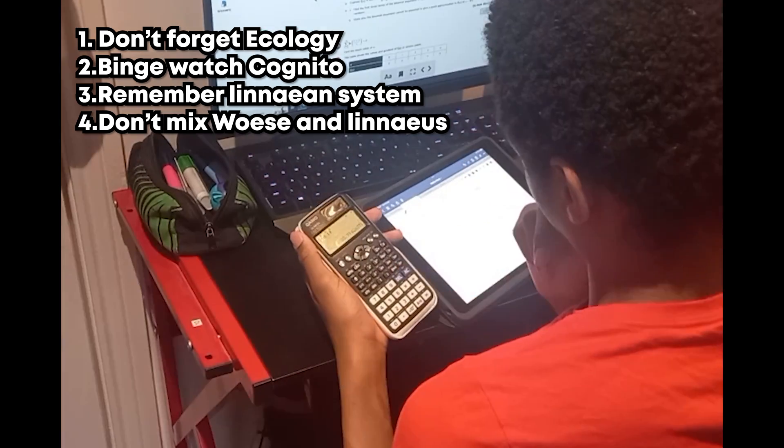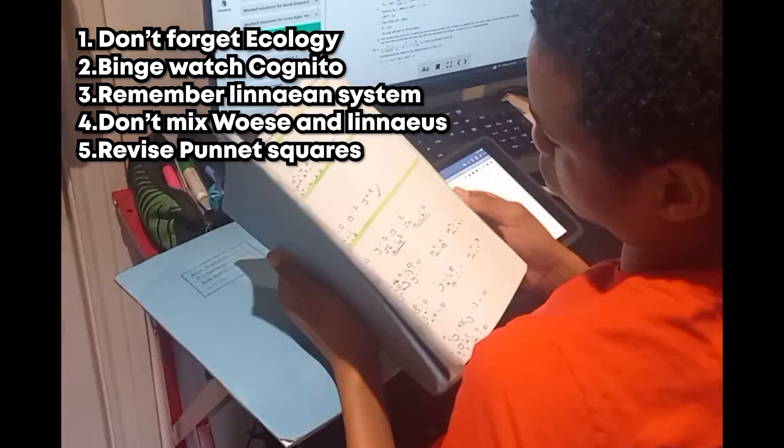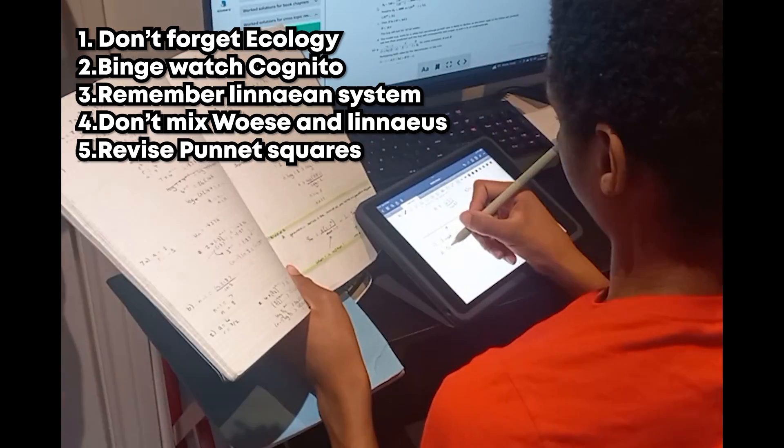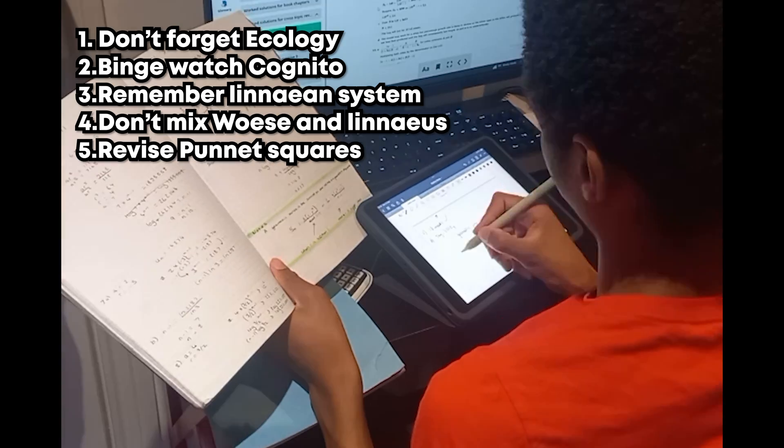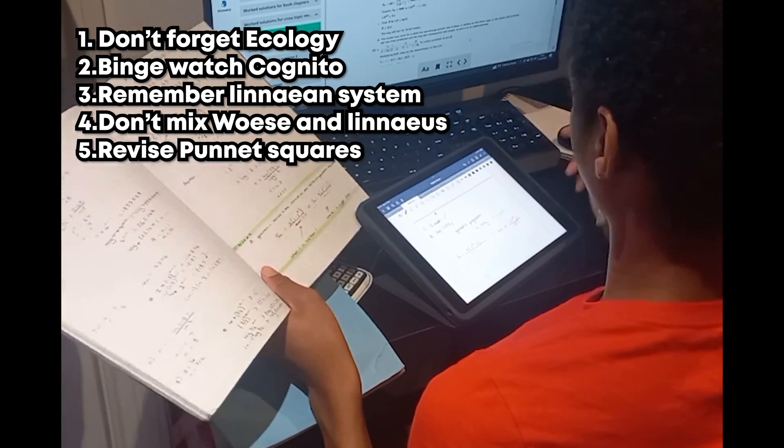My fifth tip is that Punnett square diagrams are literally free marks, so make sure you look over how to do them briefly. Often they can be up to four or even six marks to do something a primary schooler could do, at least in my opinion.